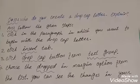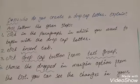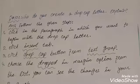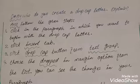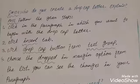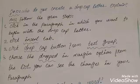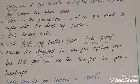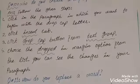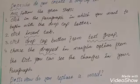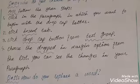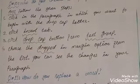Question number ten: how do you create a drop cap letter? Answer: to create a drop cap letter, follow the given steps. Step one: click in the paragraph in which you want to begin with the drop cap letter. Step two: click the Insert tab. Step three: click the Drop Cap button from the Text group. Step four: choose the Drop or In Margin option from the list. You can see the change in your paragraph.